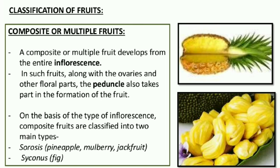In syconus, the thalamus becomes a cup-shaped structure. In that cup-shaped structure, many flowers are arranged — male flowers, female flowers, etc. If you remember the inflorescence hypanthodium, that hypanthodium inflorescence forms the syconus fruit — the fig, that is Ficus carica. These are the basic types of fruits.